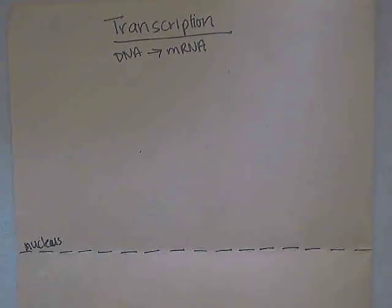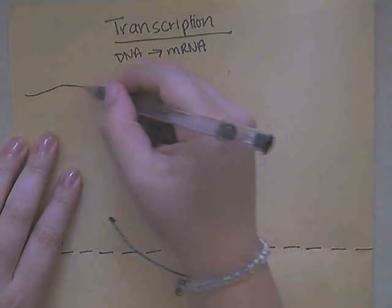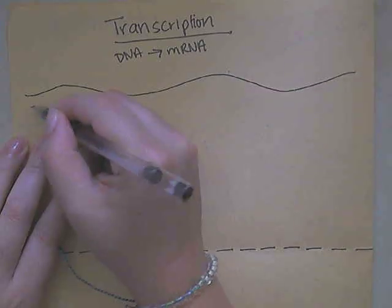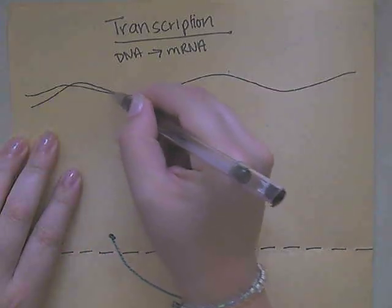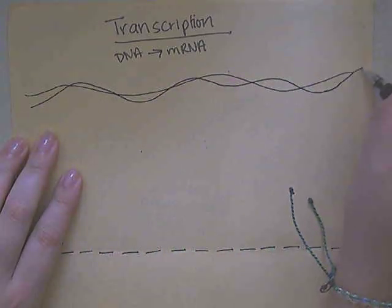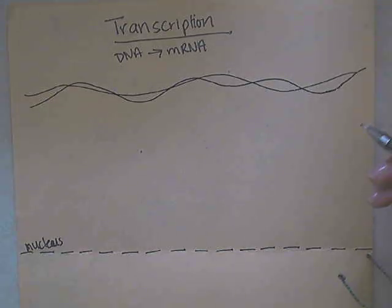This process of transcription is going to take place in the nucleus of a cell. The first thing that's going to happen is we're going to take DNA — double-stranded DNA — we're going to uncoil it, and we are going to expose the nitrogenous bases, because that's where the code for the DNA is.